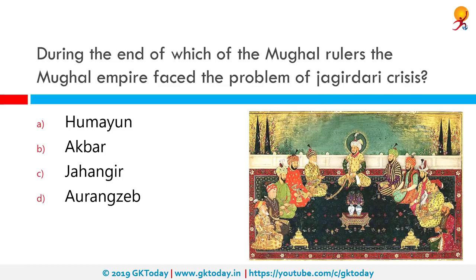During the end of Mughal rule, the Mughal Empire faced the problem of the Jagirdari crisis, during the reign of Aurangzeb. The Jagirdari system was initially designed to cope with a rapidly changing socio-political situation in the 18th century. In its prime, the system kept in check the centrifugal forces represented by the zamindars and promoted centralized policy. As time passed, the old hierarchical society and the Jagirdari system were at odds with rising social forces.